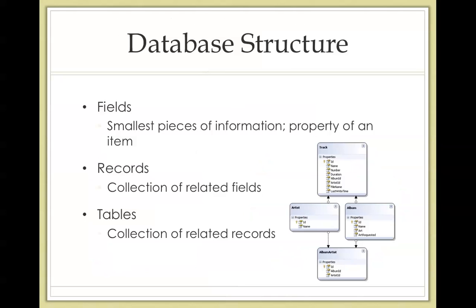So the database structure. Databases are organized into fields, records, and tables. A field is the smallest piece of information in the database and is a property of an item. For example, specific characteristics such as the name of a student, the type of cloth in a clothing, and the email of an employee are all fields.